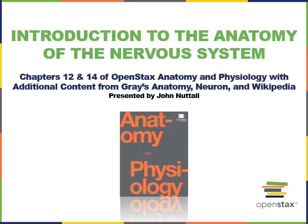This video covers an introduction to the anatomy of the nervous system. The material mostly comes from chapters 12 and 14 of OpenStax Anatomy and Physiology, which is freely available online. Some additional content comes from Gray's Anatomy, the 1918 edition in the public domain, as well as a review article by Larry Squire published in the journal Neuron, and an image from Wikipedia. All of this information is either covered by a Creative Commons license or is in the public domain.